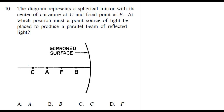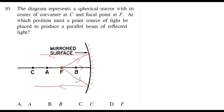At which position must a point source of light be placed to produce a parallel beam of reflected light? The answer is: this is a concave mirror, and at the focus, if you keep a very small object, the rays diverging from it will — after reflection — become parallel. Parallel rays go to infinity, so the correct answer is D — at the focus.